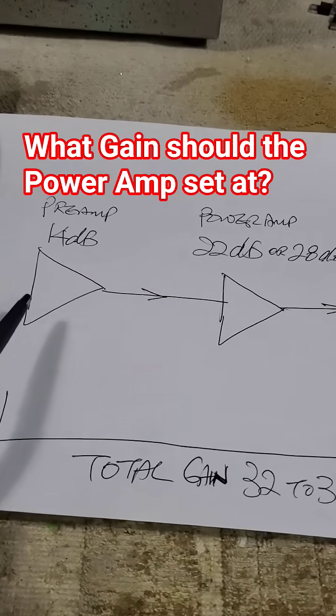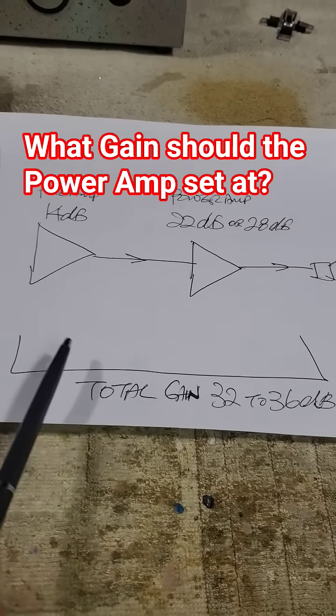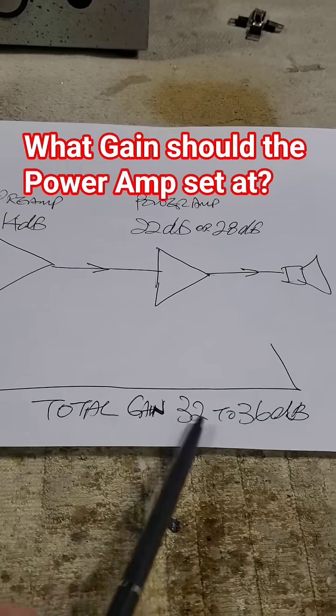It's not quite ideal but high enough, and my idea of total gain between the preamp and the power amp or integrated amp should be 32 to 36 dB.